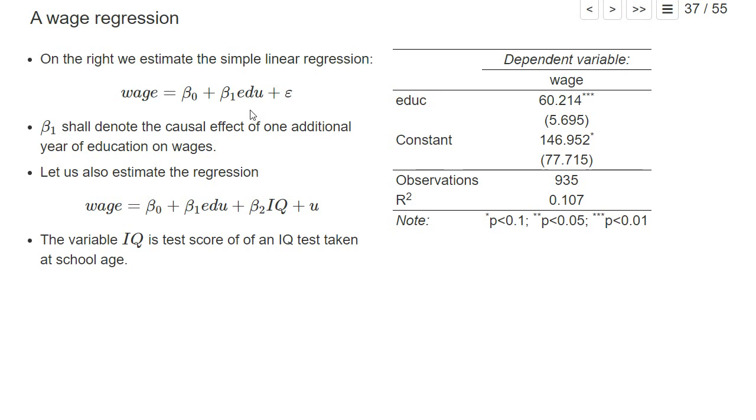Now, when beta one in this regression shall estimate the causal effect, it's very unlikely that the simple regression consistently estimates the causal effects.